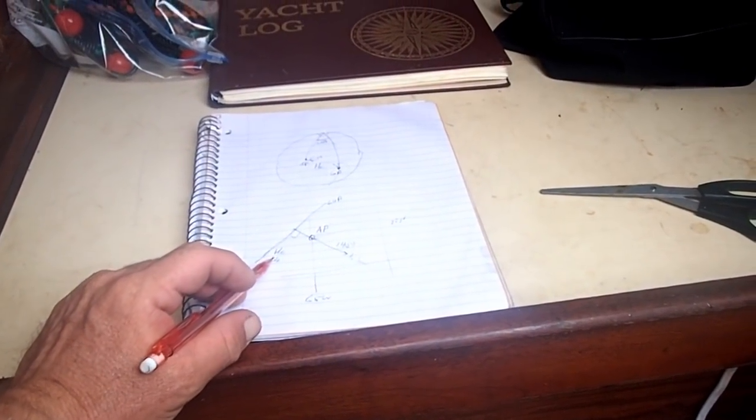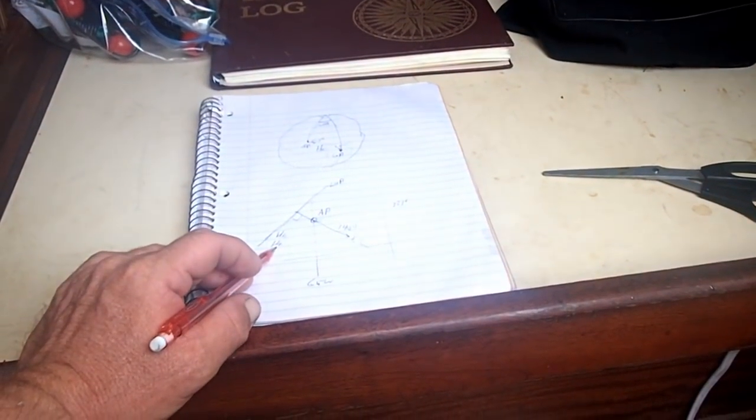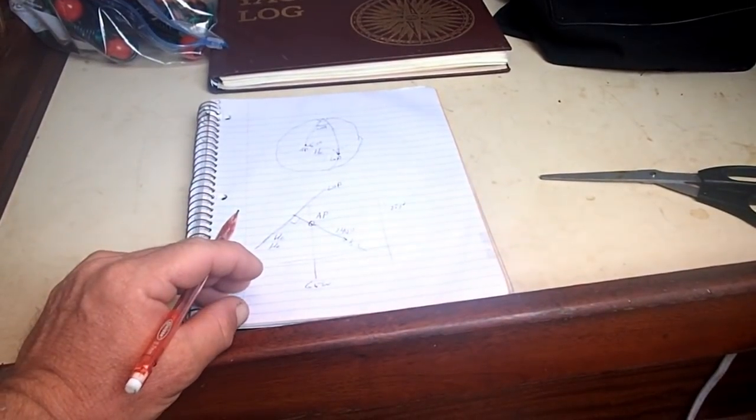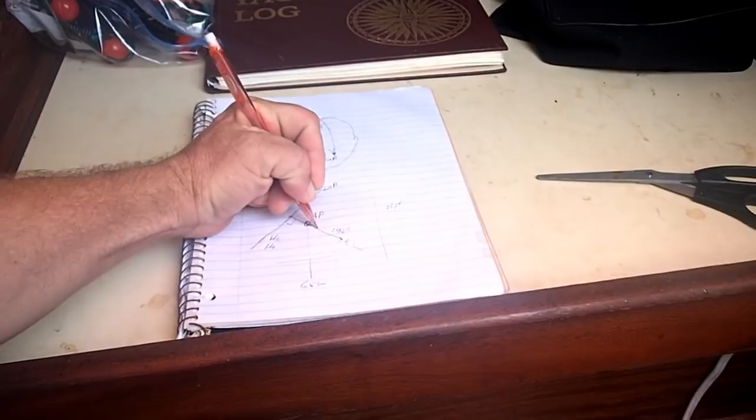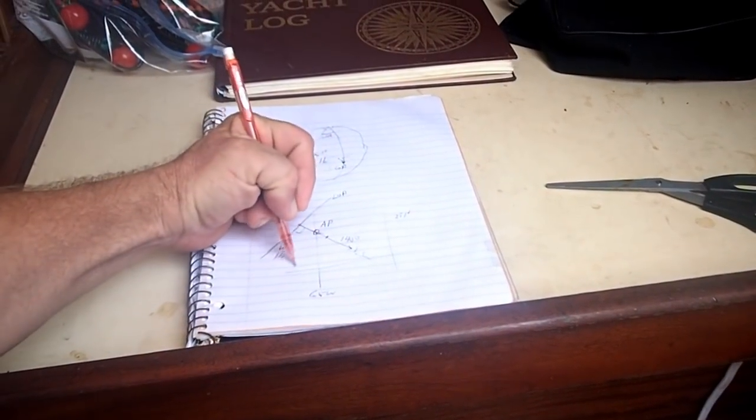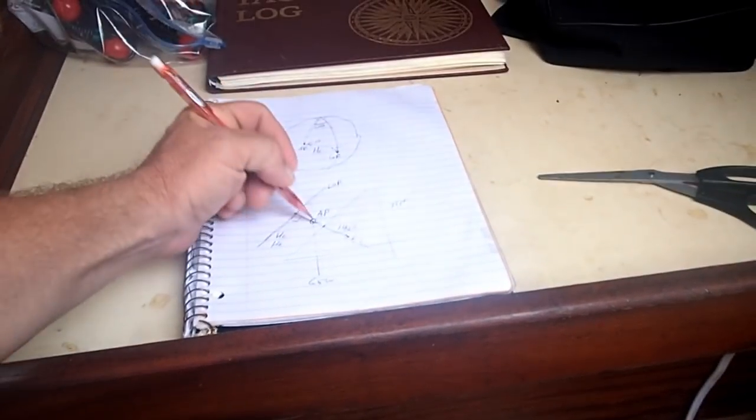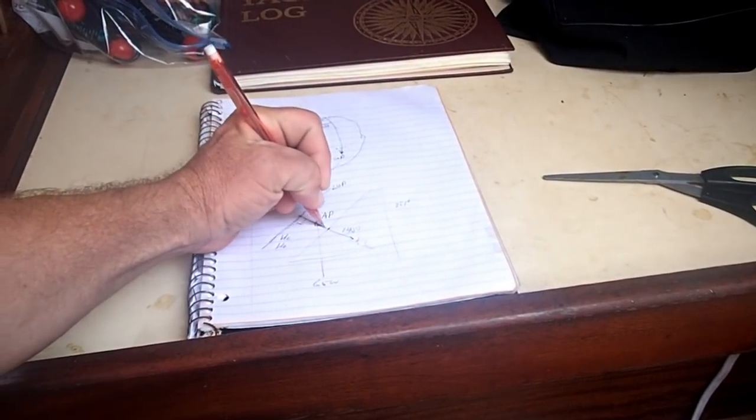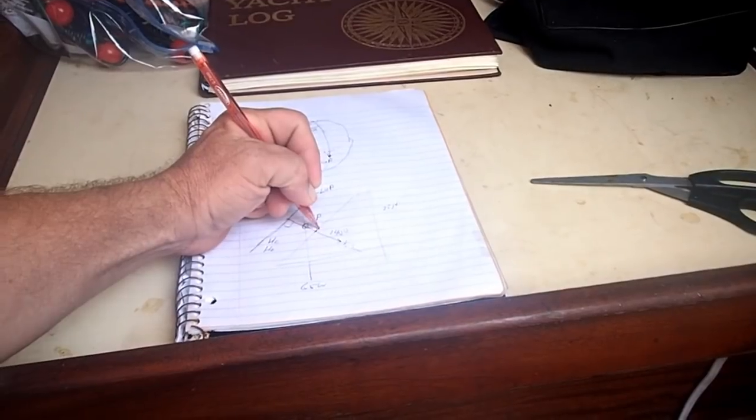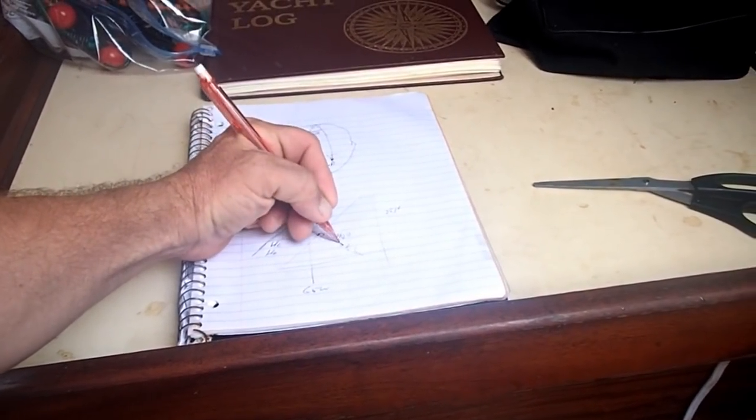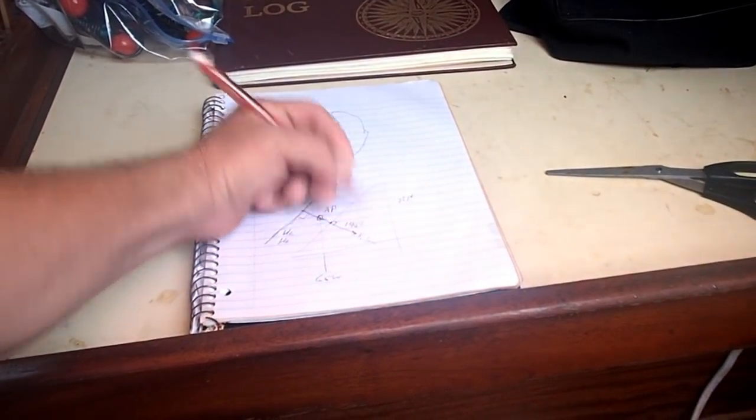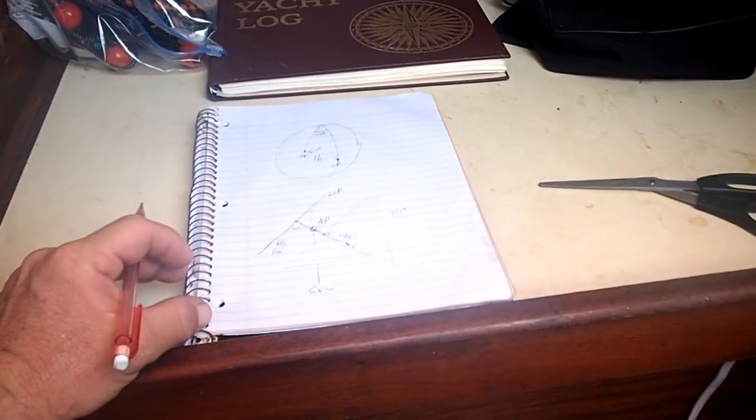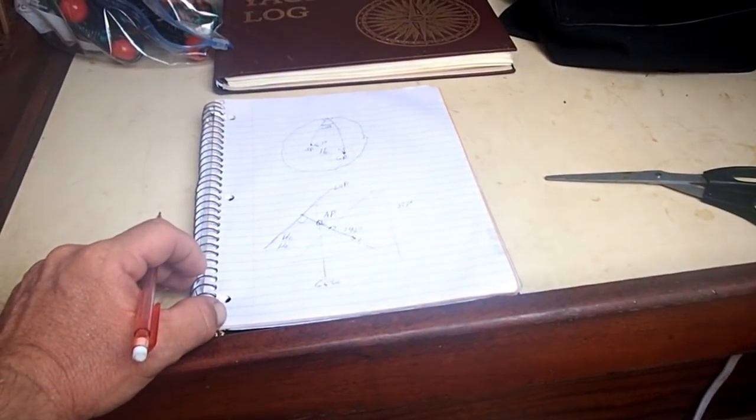If, on the other hand, our observed altitude was larger than the computed, say it was two arc minutes larger than the computed, then we'd be two miles, we'd be on a line of position somewhere two miles closer to the sun. And that line of position would pass within two miles of our assumed position, and we draw that LOP at 90 degrees to the vector going to the sun. So, that is essentially it as far as getting a line of position.